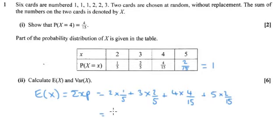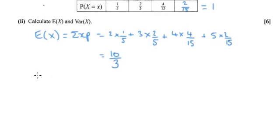So that's two fifths, six fifths, sixteen fifteenths, and ten fifteenths. That's ten thirds, ten over three.